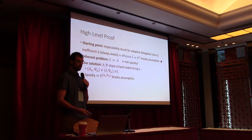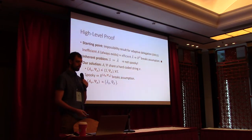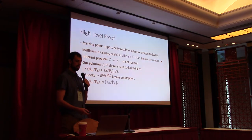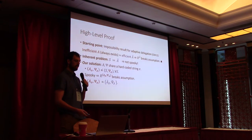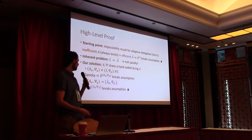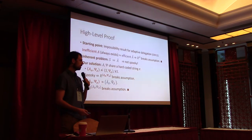The second step is similar to Gentry-Wichs: we simulate our adversary by replacing sigma with another string sigma-tilde. Sigma-tilde with a slight modification to A and psi allows us to simulate A and psi. Since the reduction cannot tell whether it is talking to the efficient or inefficient adversary, we also break the assumption — giving an efficient algorithm that breaks the assumption, a contradiction.